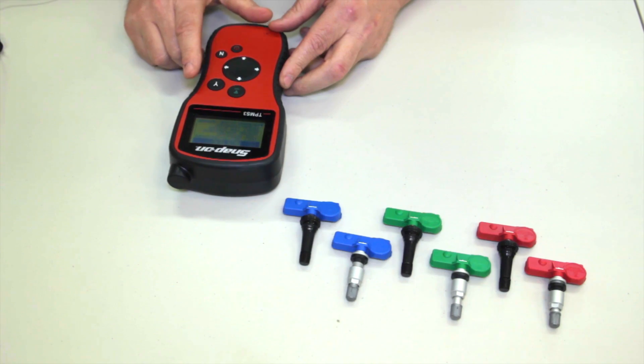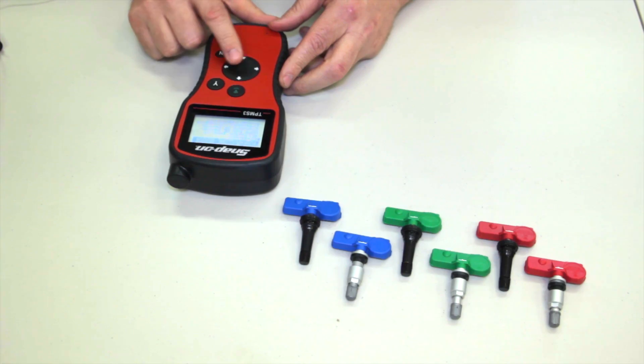Power the tool up, select program sensor, scroll to the quick sensor.